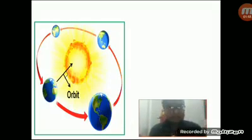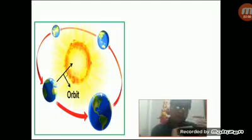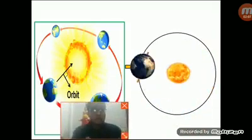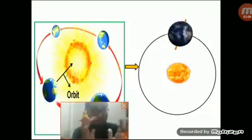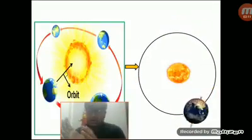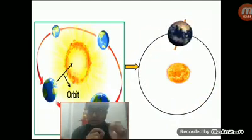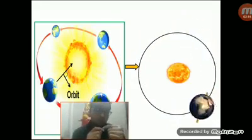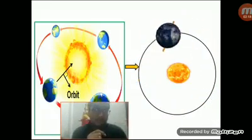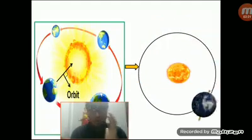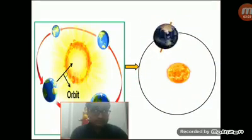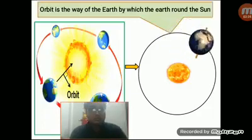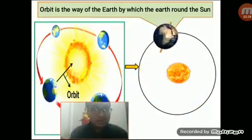Basically, orbit is the path of the earth on which the earth moves around the sun. This line is called the orbit line of the earth, and the earth uses this line to move around the sun. I think you have got what is called orbit. Orbit is the way of the earth by which the earth goes around the sun.